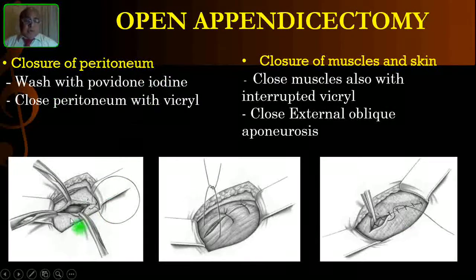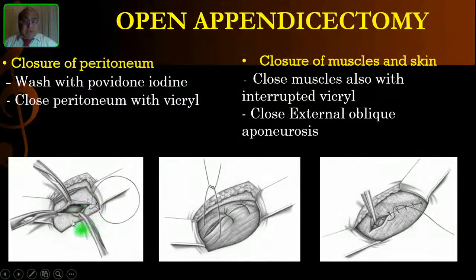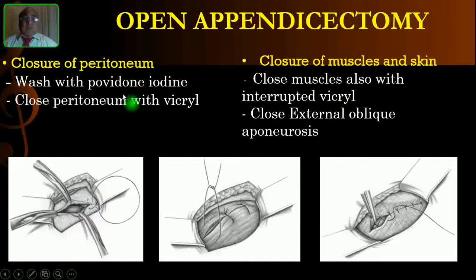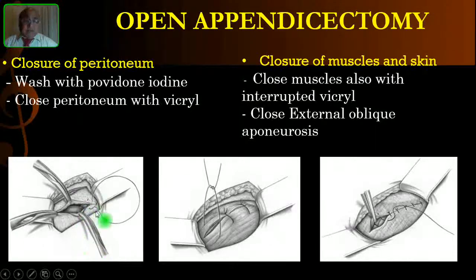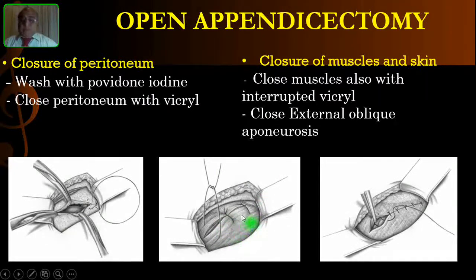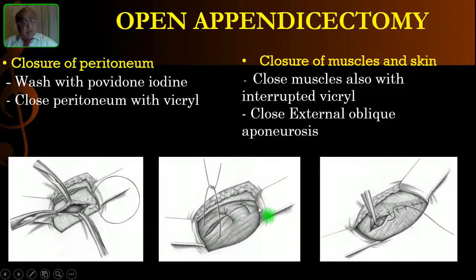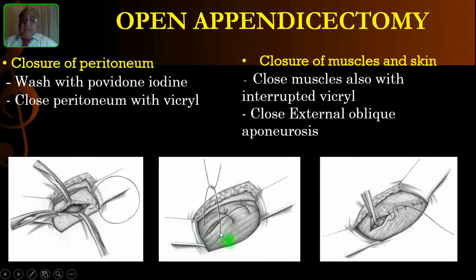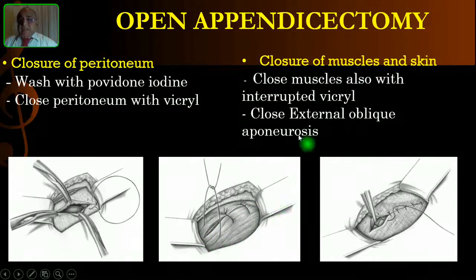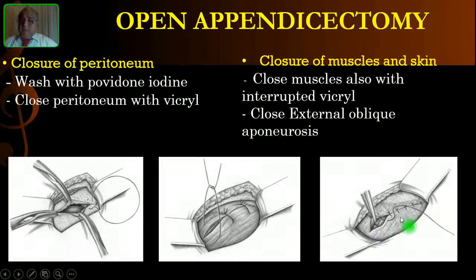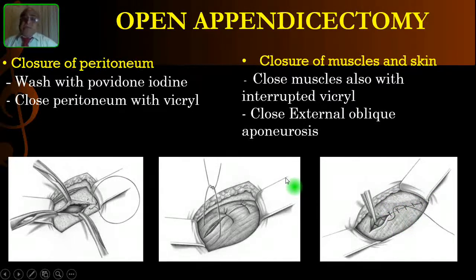Finally, before closing the peritoneum, wash the peritoneal cavity locally — not the general peritoneal cavity, just this area — with povidone-iodine. Then close the peritoneum with Vicryl using a continuous suture. Close the muscles with the same Vicryl using interrupted sutures. Finally, close the external oblique aponeurosis either continuously or with interrupted sutures, and close the skin with a subcuticular stitch.